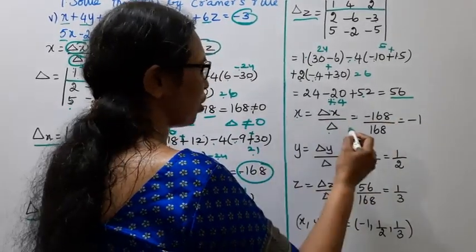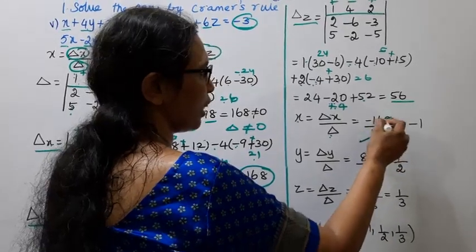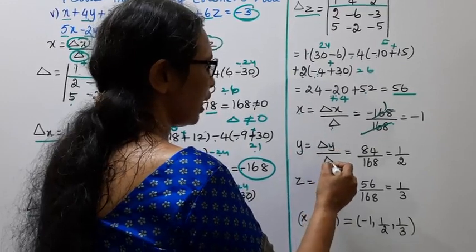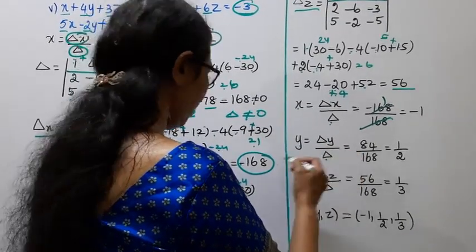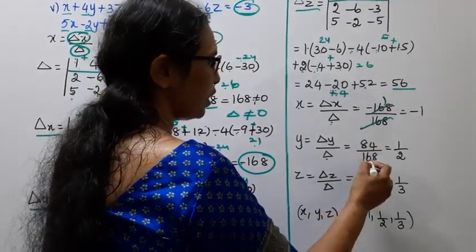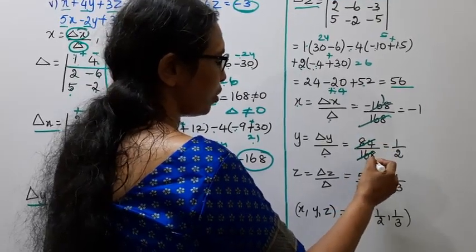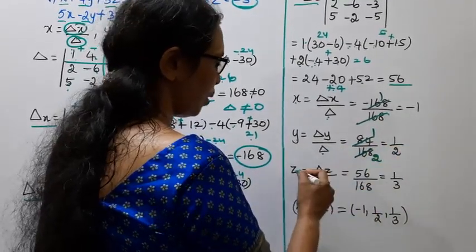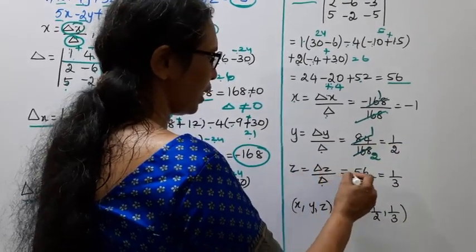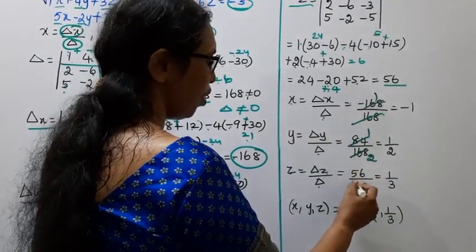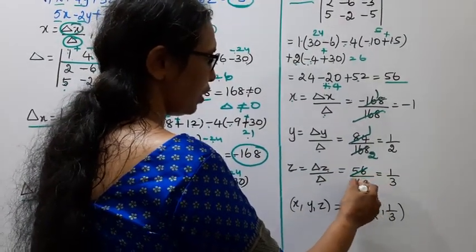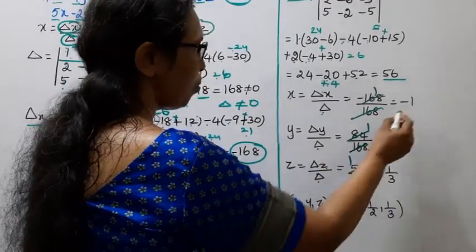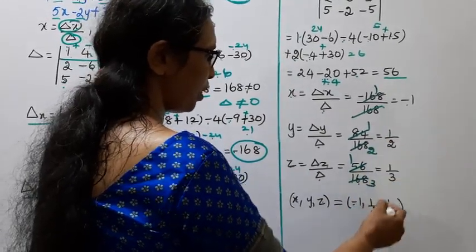Now applying Cramer's rule: x equals delta x by delta, which is minus 168 divided by 168, equals minus 1. y equals delta y by delta, which is 84 divided by 168, equals 1 by 2. z equals delta z by delta, which is 56 divided by 168, equals 1 by 3. Therefore x equals minus 1, y equals 1/2, z equals 1/3.